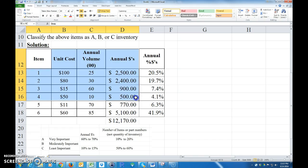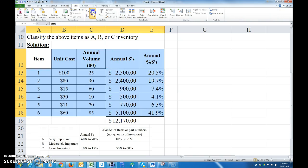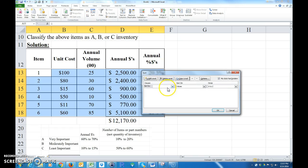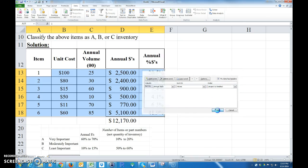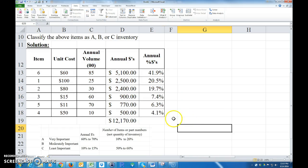So I'm going to go, I'm going to highlight just this. I'm going to go data, sort. I'm going to sort by annual percent. And I want to go from the largest to the smallest because I'm going to have A's on top. Okay, so I need 60% or 70% of the annual dollars on the bottom means 10 to 15%. So just looking at that, I would say this has to be an A for sure.